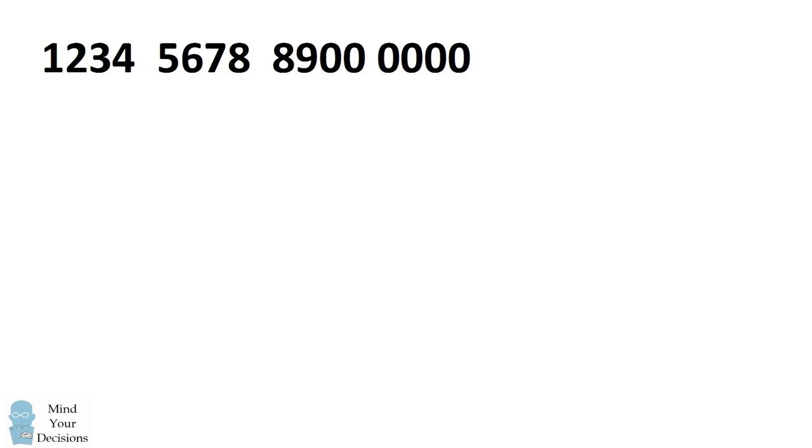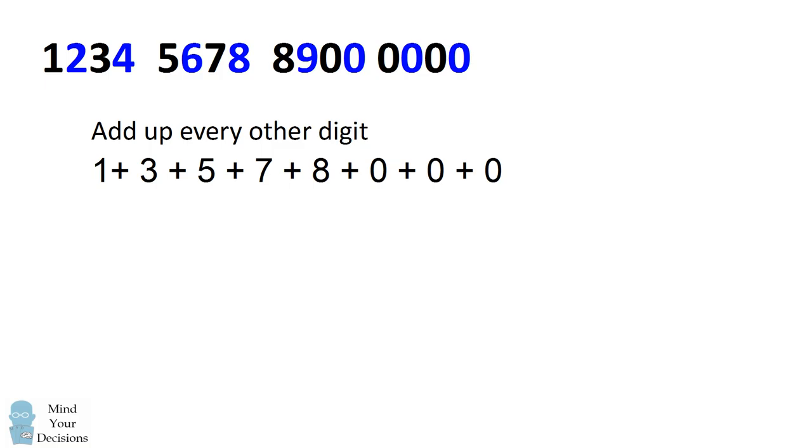To get started, focus on the 16 digits in the number and separate them into two groups. For the first step, add up every other digit, in this case the digits which are colored in black. We'll add up 1, 3, 5, 7, 8, 0, 0, and 0 to get to a sum of 24.